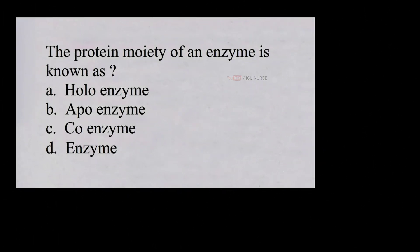The protein moiety of an enzyme is known as: a. Holoenzyme, b. Apoenzyme, c. Coenzyme, d. Enzyme. And the correct answer is b. Apoenzyme.